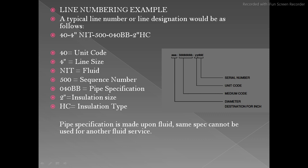Here is an example of a line number: 44-inch NIT 500-0400-BB-2inch-SC. The '40' stands as a unit code, '4 inch' is the line size, 'NIT' is the fluid service, '0400' is the sequence number, 'BB' is the pipe specification, '2 inch' is the insulation size, and 'SC' stands for insulation type.